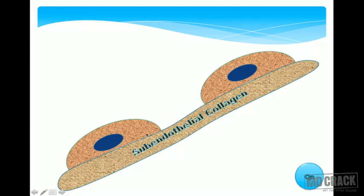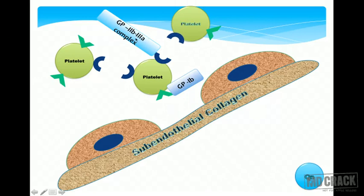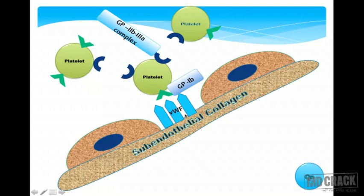Between endothelial cells lies the subendothelial collagen — the basement membrane made up of type IV collagen. Once endothelial cells are injured, blood is exposed to this highly thrombogenic subendothelial collagen, attracting more and more platelets. Platelets have surface molecules called glycoprotein Ib and glycoprotein IIb/IIIa complex. Von Willebrand factor acts as a bridge between platelets and the subendothelial collagen.